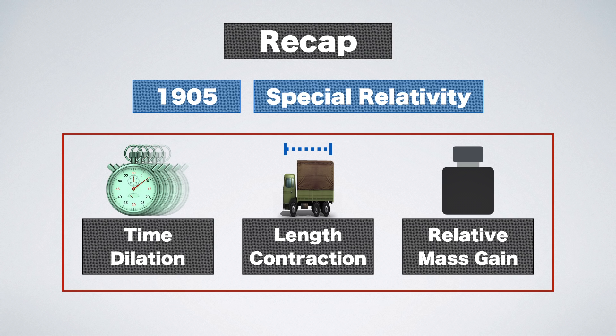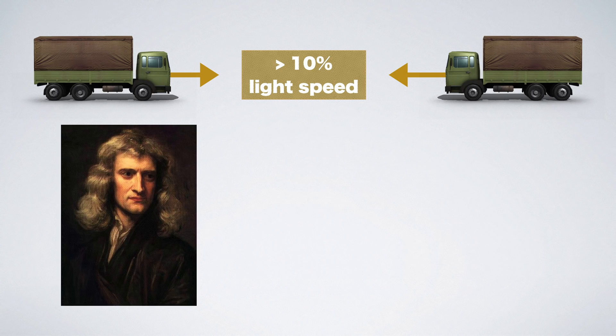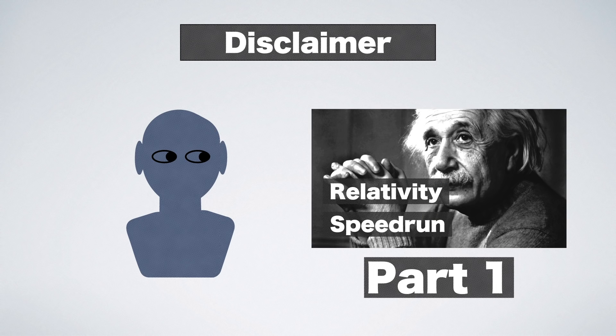These three effects become relevant for any two objects moving at more than 10% of light speed relative to each other. That's when Newton's laws produce error margins of more than 1%. If that's news to you and you don't know anything about special relativity, you should really watch part 1 first where I explain it from scratch.